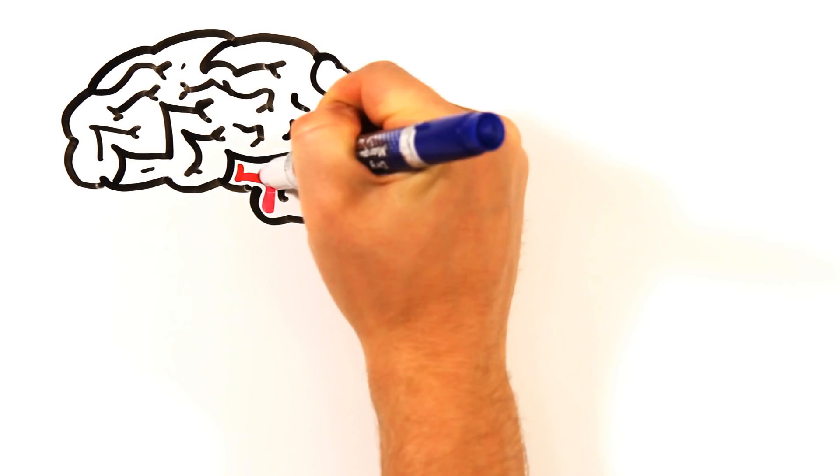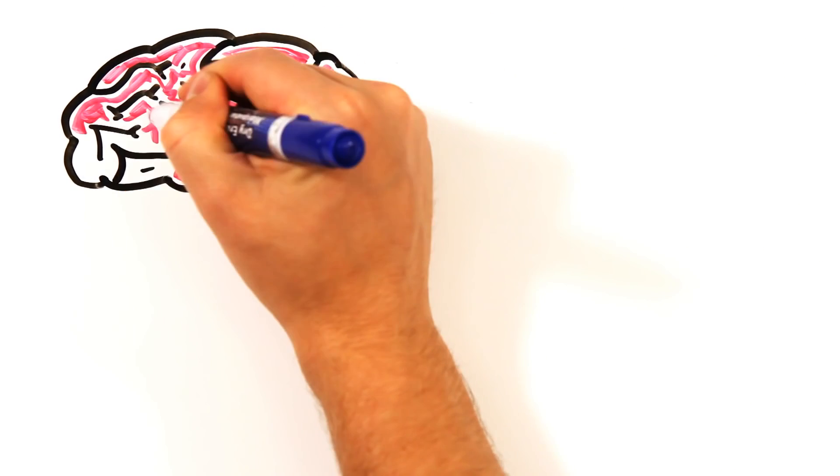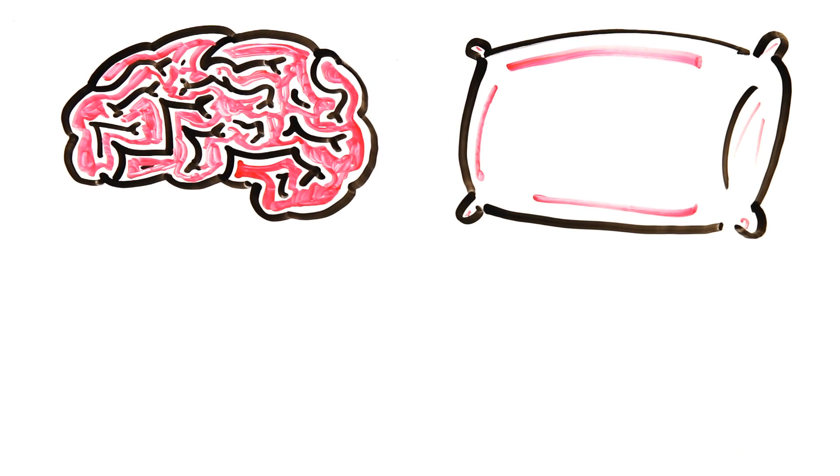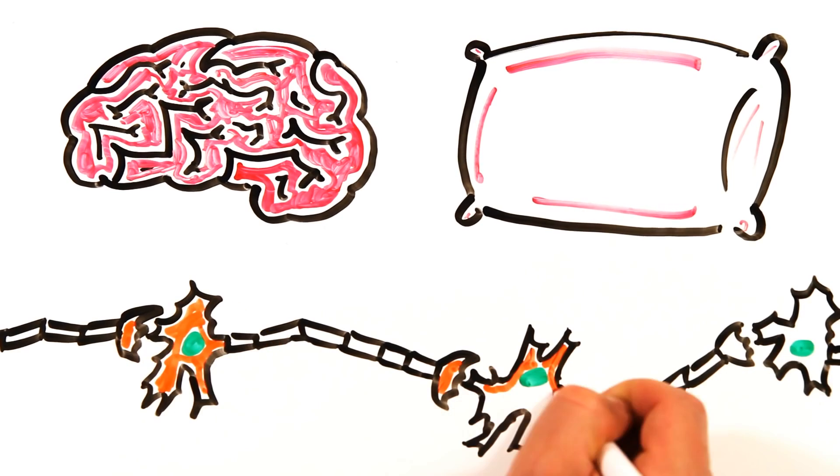While the brain may seem small, all those wrinkles are for a good reason. Spread it all out, and the brain would be about the size of a pillowcase, which is great for the trillion nerves powering your memory.